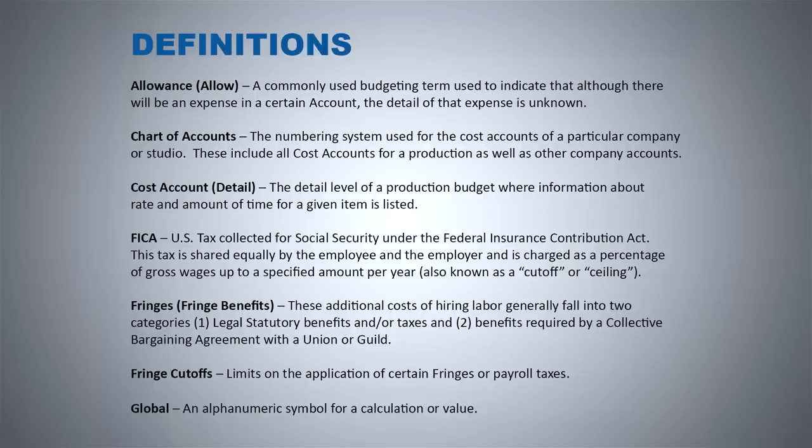Chart of accounts: this is the numbering system used for the cost accounts of a particular company or studio. It includes all cost accounts for a production as well as other company accounts. Some studios use a four-digit account string, some will use three, some use three with a dash and two more. Every studio has a different way of doing it. Luckily, we have templates that will help us comply with the chart of accounts of various studios.